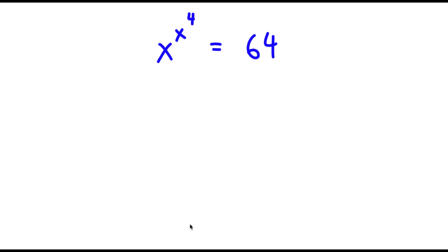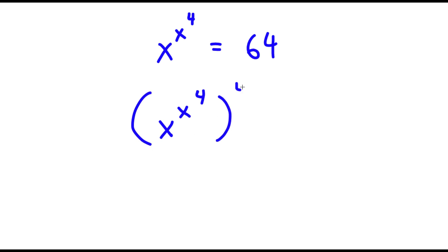Alright, so I have x to the power of x to the power of 4, is equal to 64. Now the first thing I'm actually going to do is take the power of 4 on both sides. So I have x to the power of x to the power of 4, to the power of 4, is equal to 64 to the power of 4.